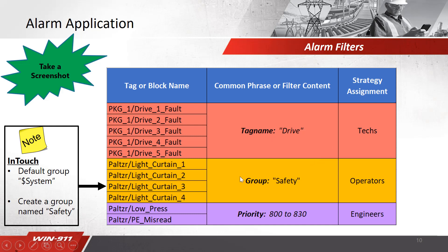The next item: we have palletizer or light curtain alarms that we'd like to go to our operators. I've grouped these in a safety group. One thing to note with InTouch is the default group is the dollar sign system group, but I've created my own group called 'safety'. The last item on the list: a couple of alarms related to the palletizer — misread and low pressure — which we'd like to go to our engineers. These alarms have a priority of 800 to 830.